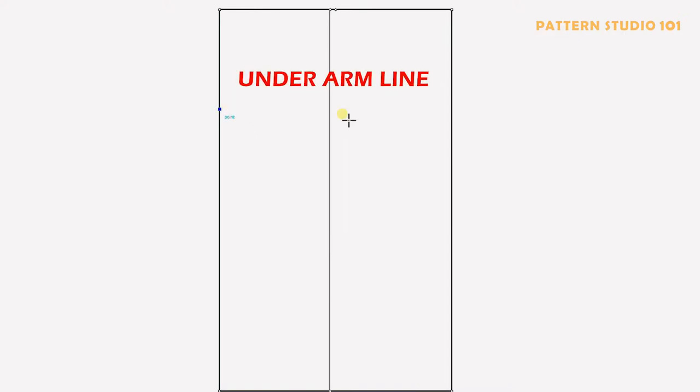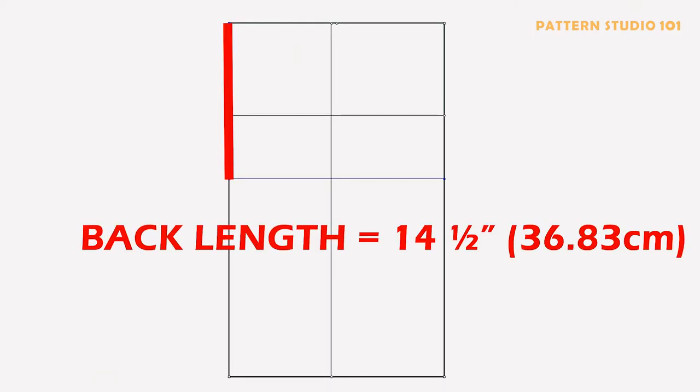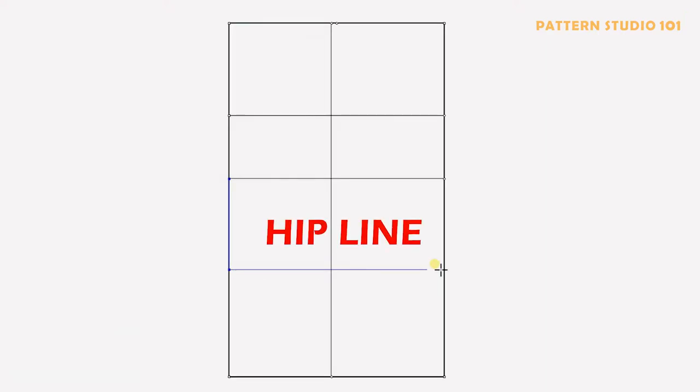My example of the back length is 14 inches and a half. From the waistline, go down the hip length and draw a hip line. This is the base frame for the jacket.